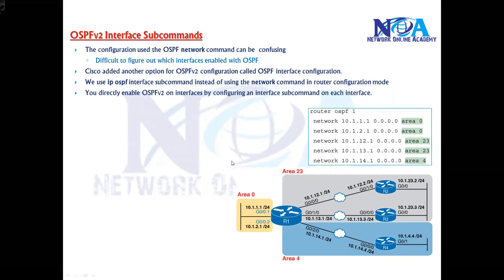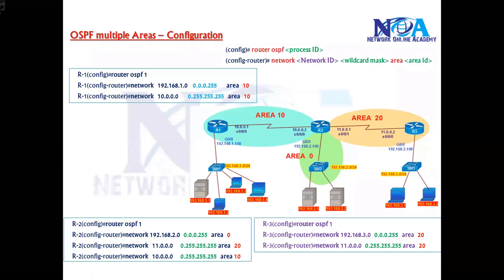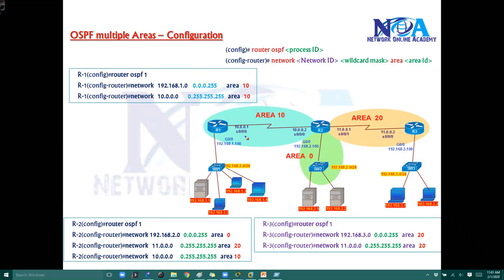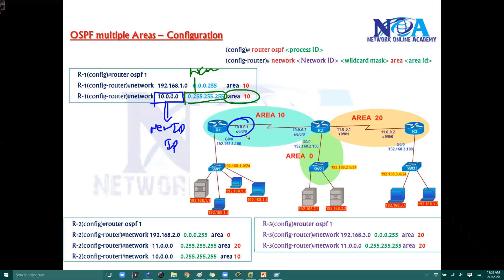If you remember in the previous concepts, we have seen the OSPF configuration generally. The OSPF configuration goes like, in this example, when you want to advertise this 10-dot network, you just define that particular network ID or the IP address if you want to advertise only that particular interface, then the wildcard mask, and then you have to tell which area that particular interface comes in. This is the normal or common way you generally do it.